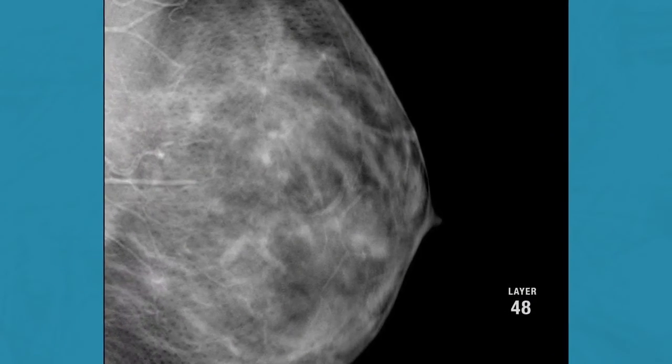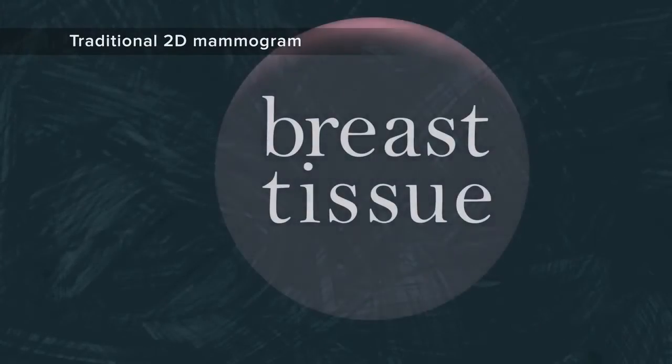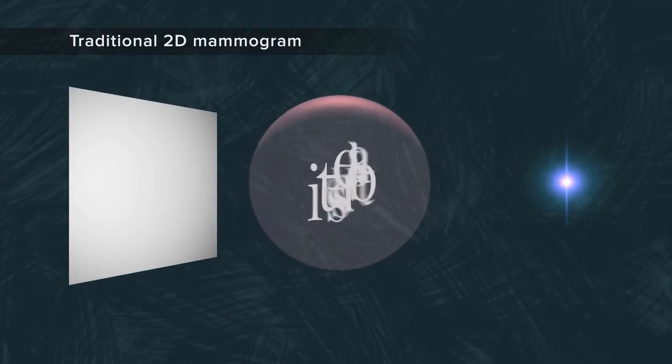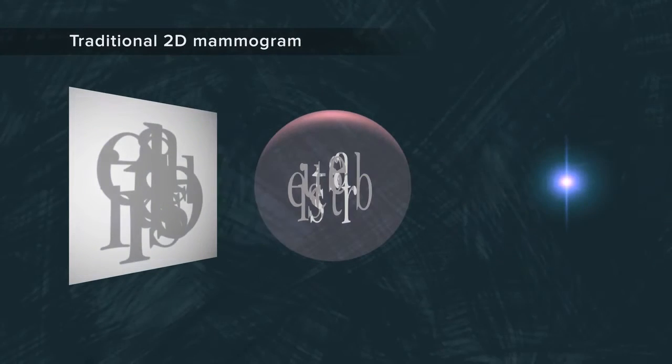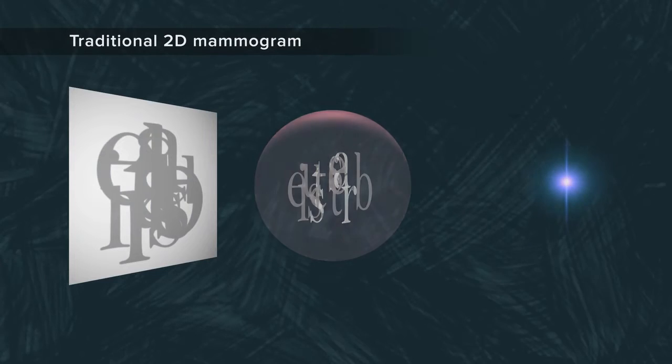Why is this a good thing? Well, a traditional 2D mammogram shows all the breast tissue at a glance. That means one feature can hide in the shadow of another.